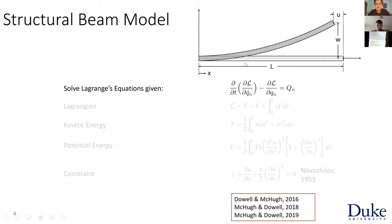So we have this beam model. We want to calculate the motion of this model. This is a cantilevered beam — you have a fixed end at the left and a free end at the right. Normally what we do is calculate the out-of-plane displacement W, but because there's no support on the left end, the whole thing is also free to move in the in-plane direction U. We're going to couple the U and W equations with what we call the inextensibility condition.